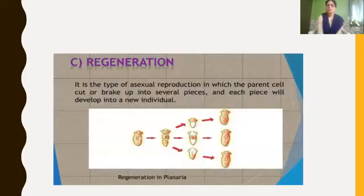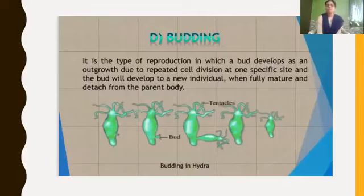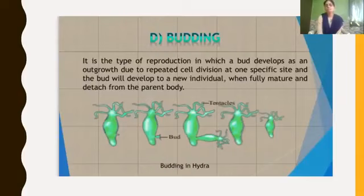Regeneration is a type of asexual reproduction in which the parent is cut or broken into several pieces, and each piece will develop into a new individual. The example is planaria. Budding is a type of reproduction in which an outgrowth occurs due to repeated cell division at one specific site; the bud develops and then becomes a new individual. When it is fully mature, it detaches from the parent body. The example is hydra. We have already learnt about budding in yeast in seventh standard. Here we are going to learn about budding in hydra in detailed manner.